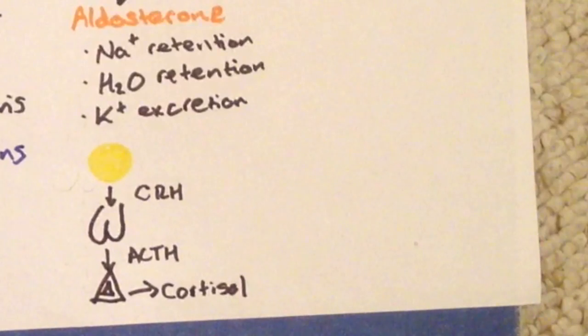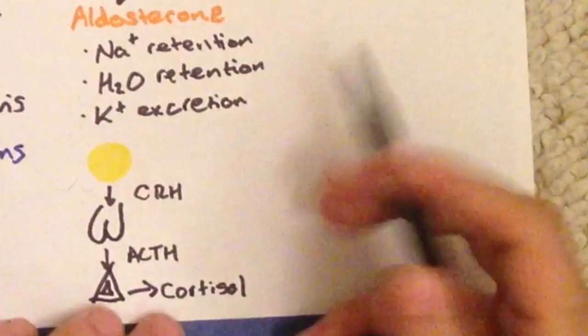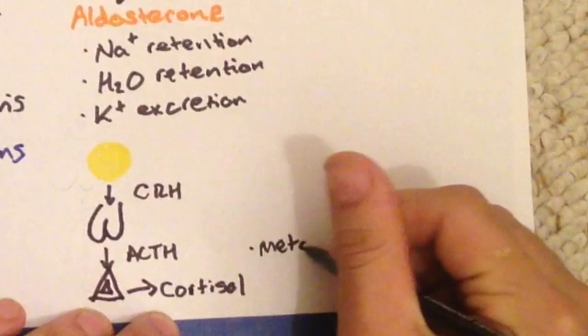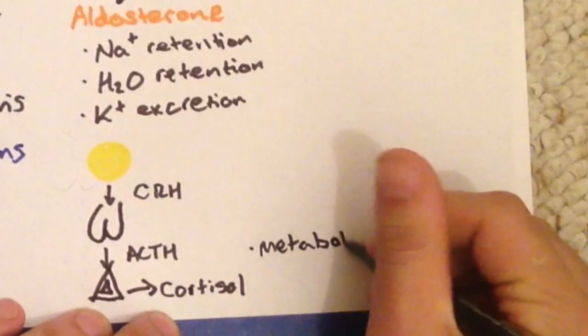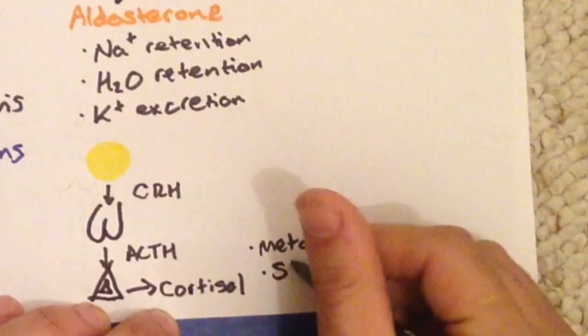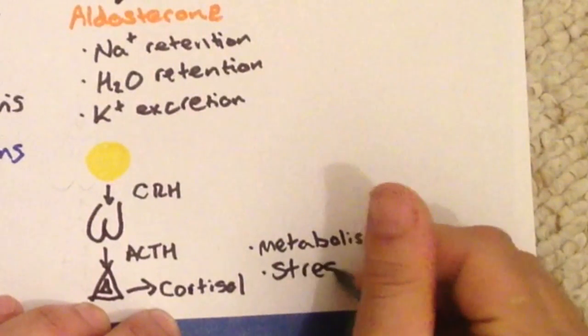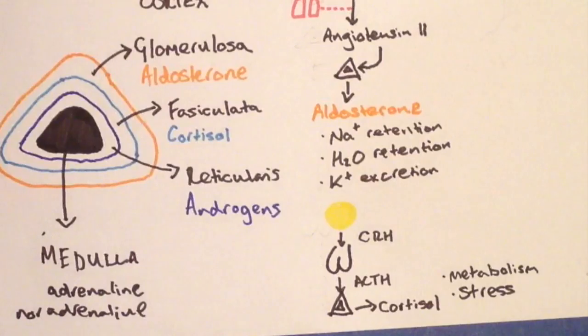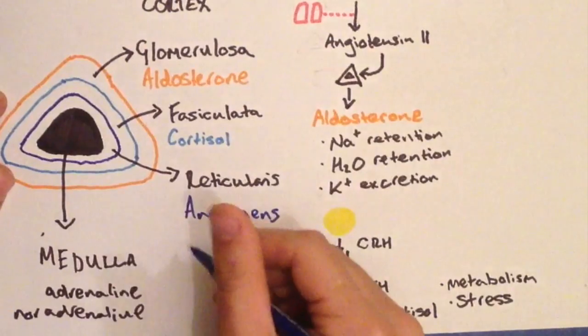So cortisol is a steroid hormone and its main role is in metabolism. It increases our hepatic gluconeogenesis, it increases our lipolysis, and it has a role in protein metabolism. Outside of metabolism, it also has a role in our stress response and it also has immunosuppressant properties.